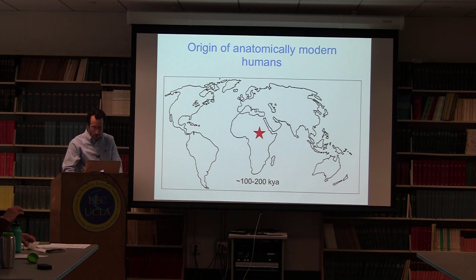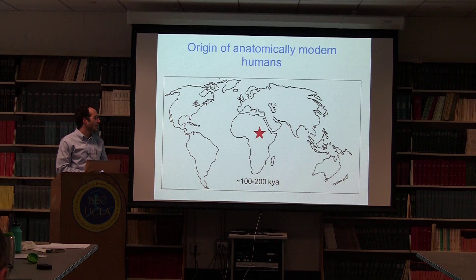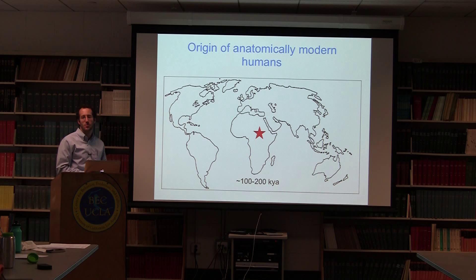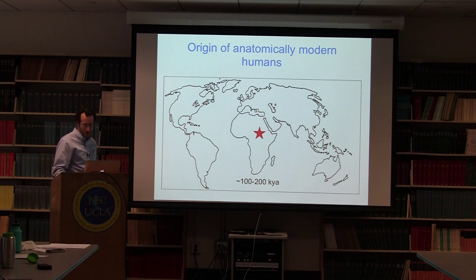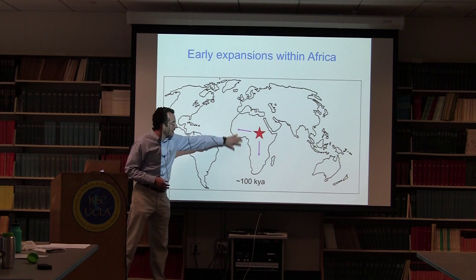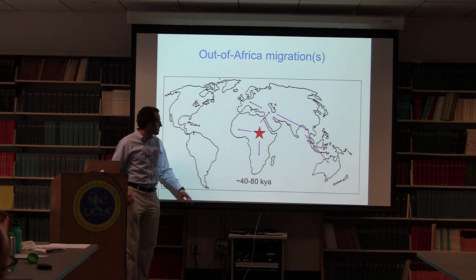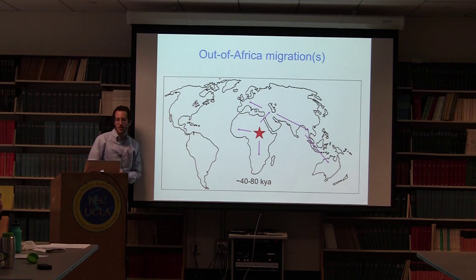There are two major goals or areas of research in human evolutionary genetics. The first is understanding human history from genetic variation data. Current genetic evidence, as well as fossil evidence and other anthropological studies, suggest that anatomically modern humans originated within Africa somewhere between 100,000 and 200,000 years ago, that there were early expansions within Africa within the last 100,000 years, and then more recently, maybe 40,000 to 80,000 years ago, there was a migration of humans out of Africa to populate the rest of the world.